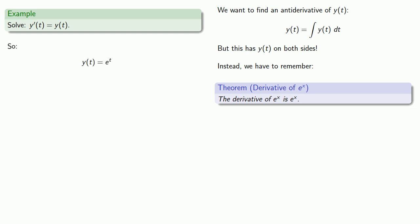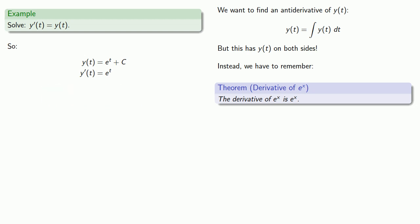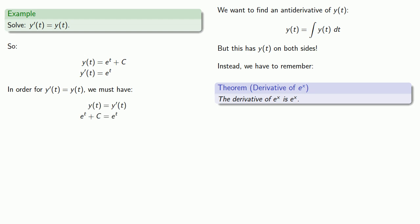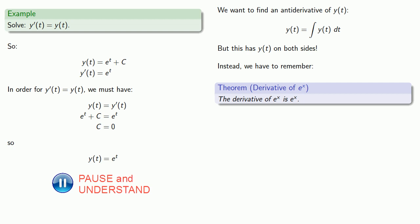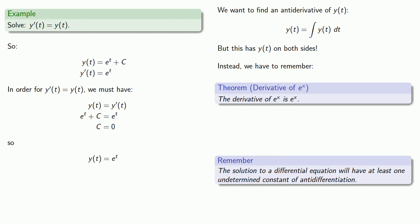We're supposed to have at least one undetermined constant of antidifferentiation, so let's make that plus c. That means y prime of t is going to be e to the t. In order for y prime of t to equal y of t, we need e to the t plus c to equal e to the t, which means c has to be zero. So our solution is y of t equals e to the t — but we're supposed to have an undetermined constant, and we don't. How do we get one?